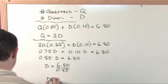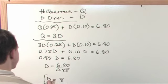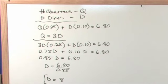So D is going to be equal to 8 when you put this in your calculator. The number of dimes you have is 8.